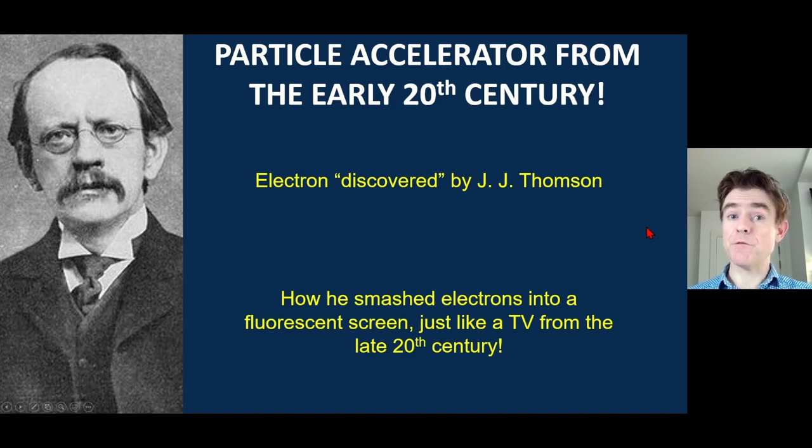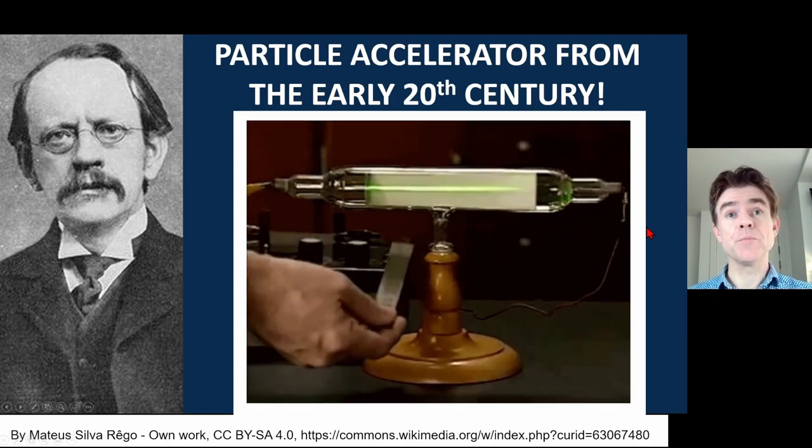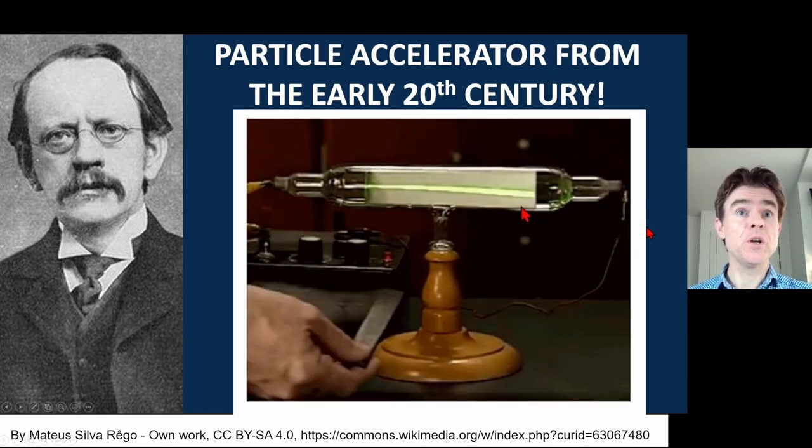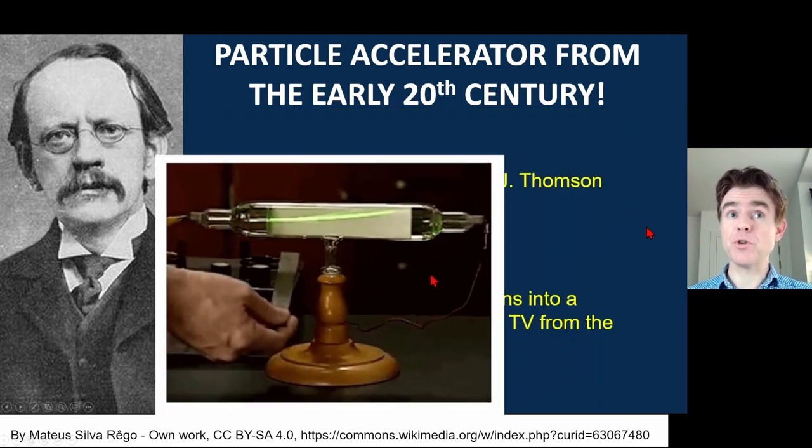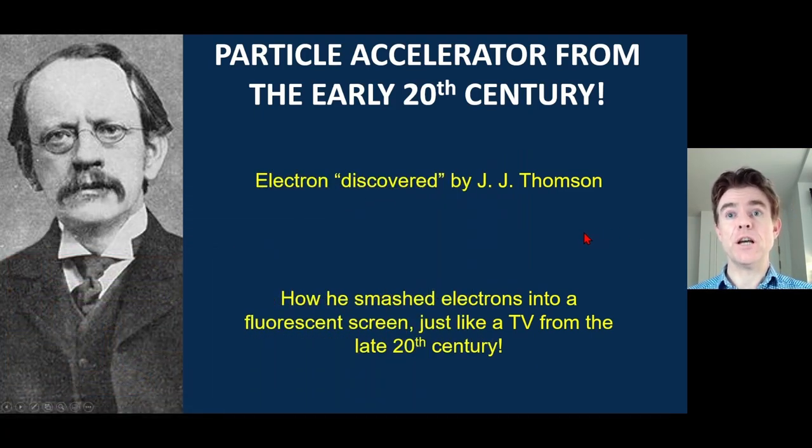In this video, I want to talk about a very early 20th century particle accelerator called the cathode ray tube. And this is a piece of apparatus that J.J. Thomson worked with in order to discover the electron.